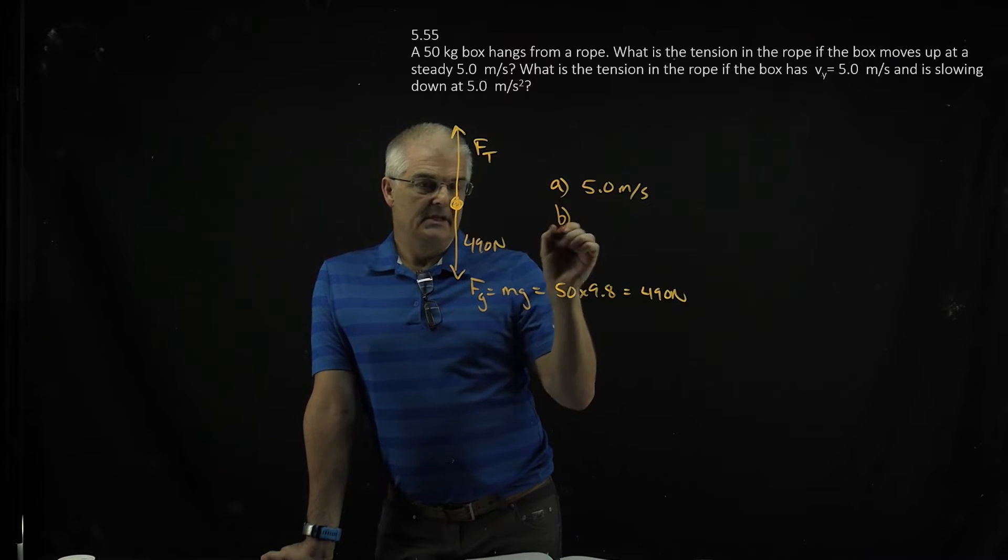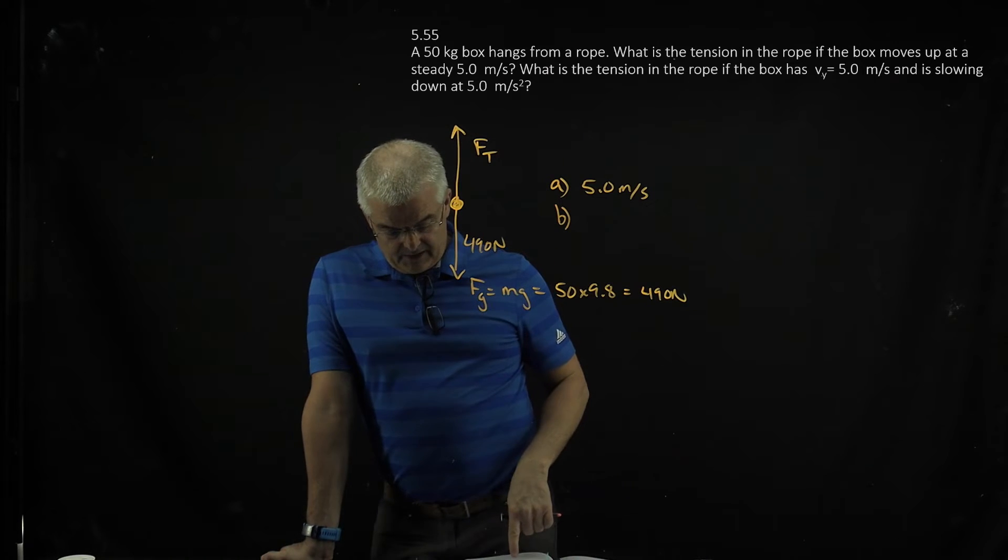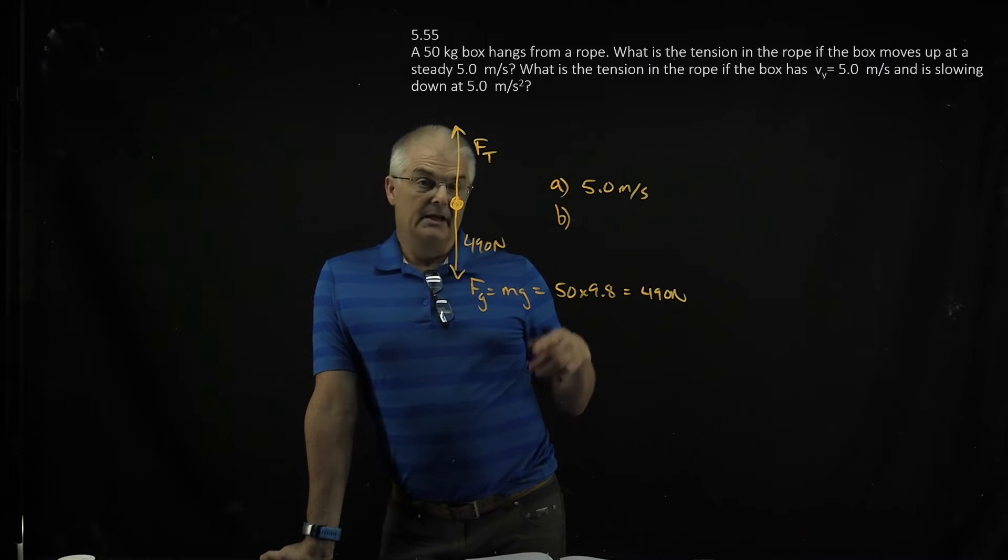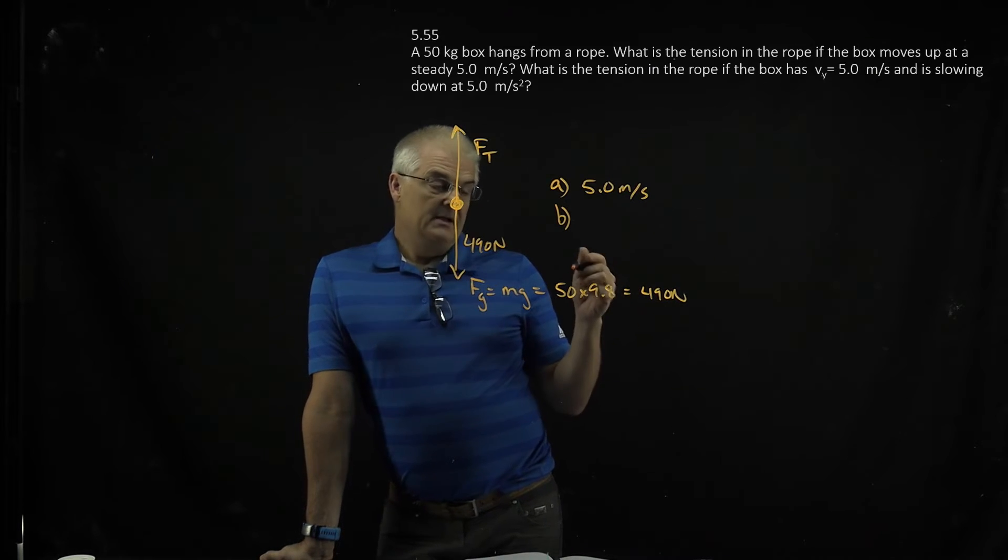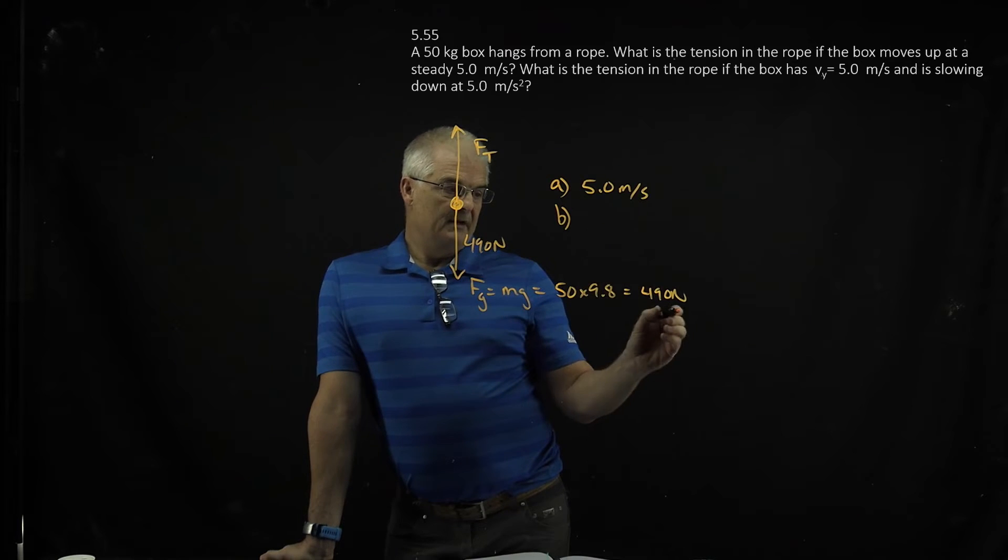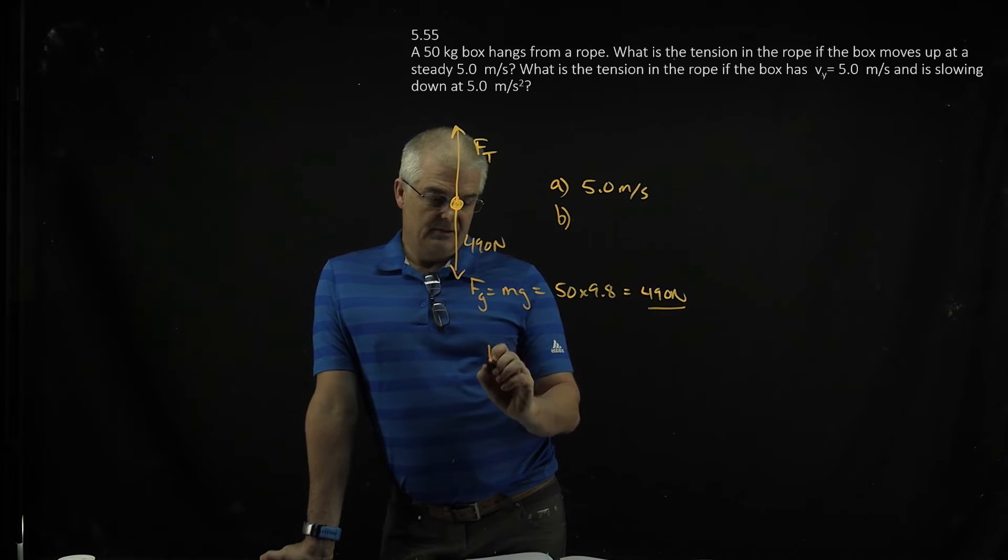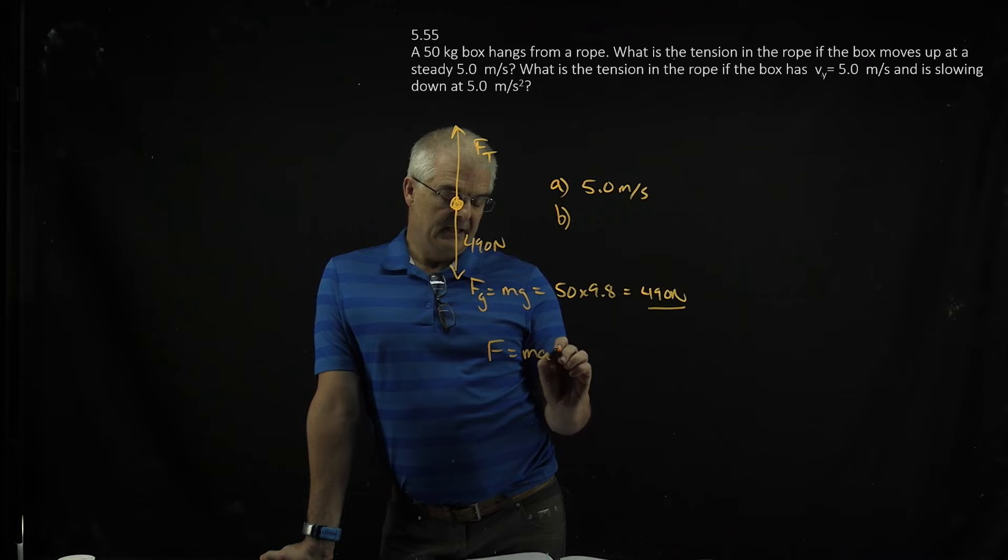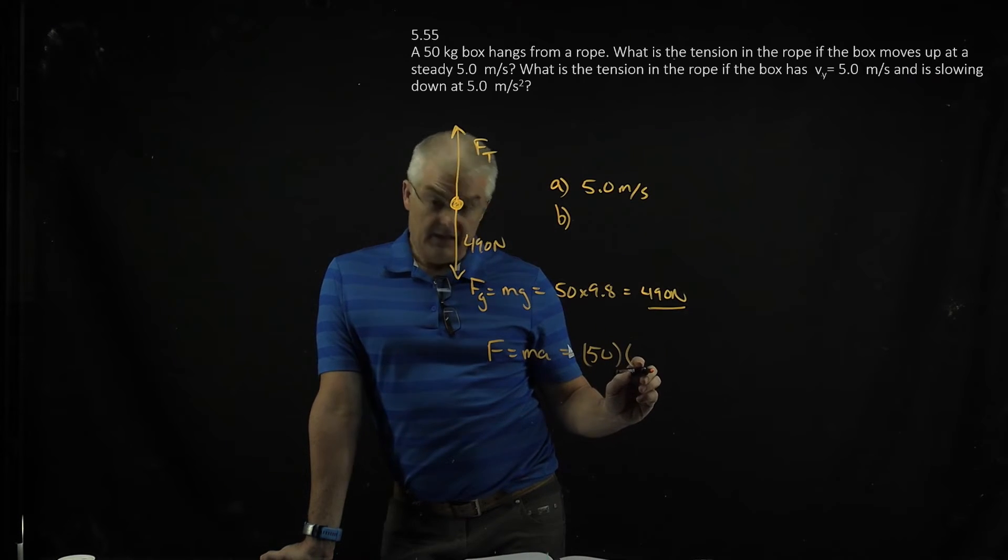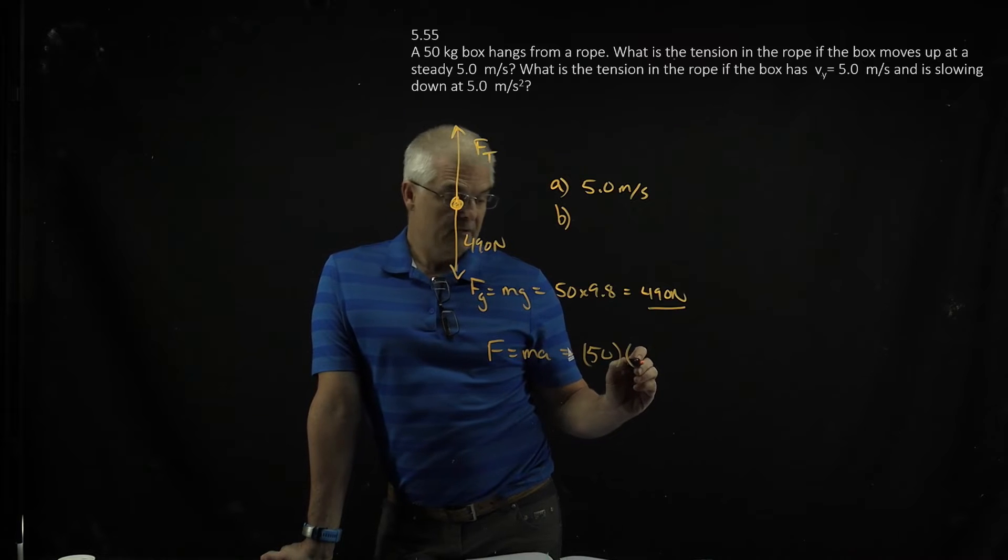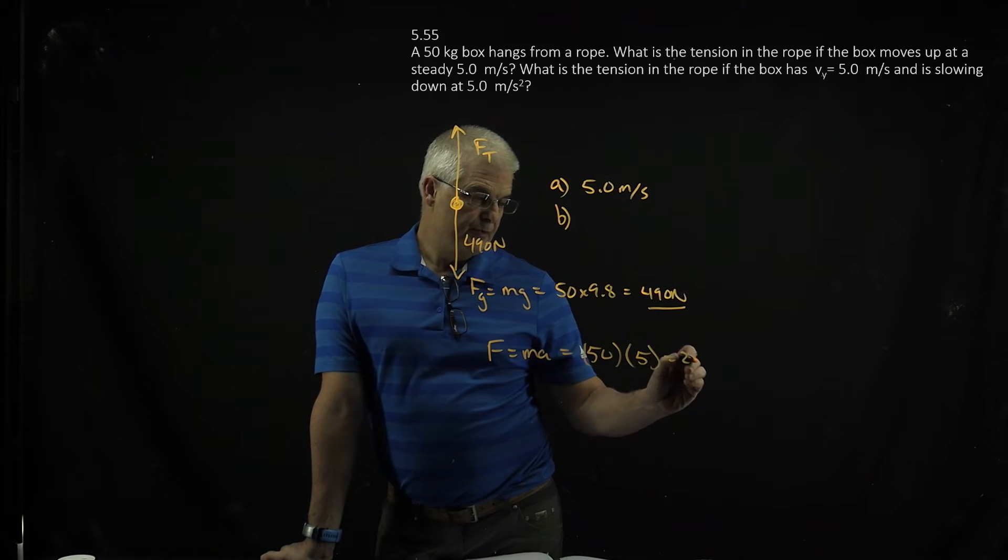But for part B, we now have a second thing going on. We are accelerating at 5 meters per second. Now let's think about that for a moment. So you've got 490, and then you'll do F equals MA, which equals 50 times, now what is it, 5 meters per second squared? So that's 250 newtons.